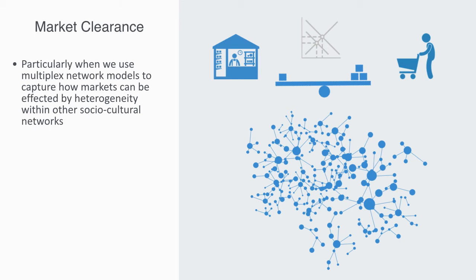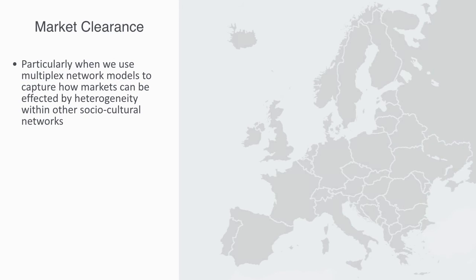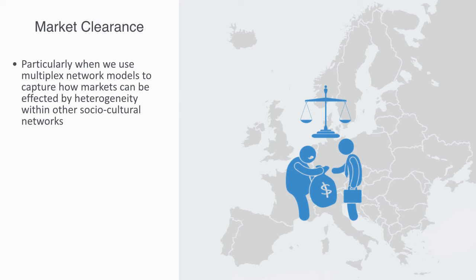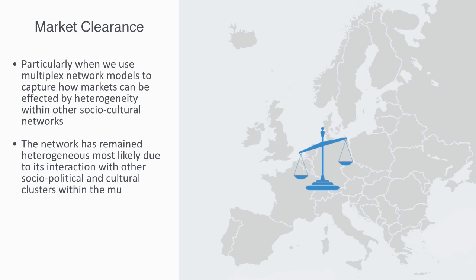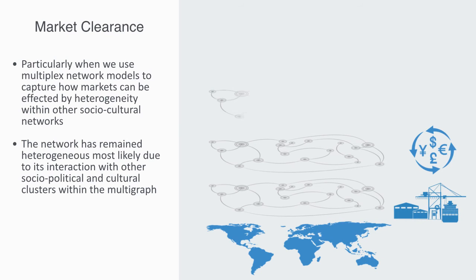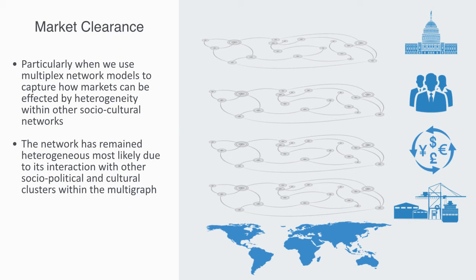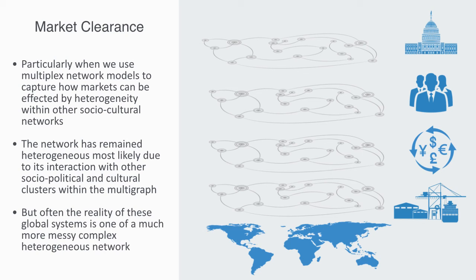This is a very different vision of resource allocation. In our traditional paradigm, resource allocation is all about equilibrium — the efficient markets hypothesis: markets always reach an equilibrium and clear. From the network perspective, an equilibrium where all prices across the market equalize would be a perfectly homogeneous network, which might exist in very simple environments. But heterogeneity across the network is much more likely, particularly when we use multiplex network models to capture how markets can be affected by heterogeneity within other socio-cultural networks. Going back to our previous example of the European economy: when the union was economically integrated, people thought that the higher wages in Germany would reach an equilibrium with lower wages in the southern European countries. This hasn't really happened, though. The network has remained heterogeneous, most likely due to its interaction with other socio-political and cultural clusters within this multi-graph.